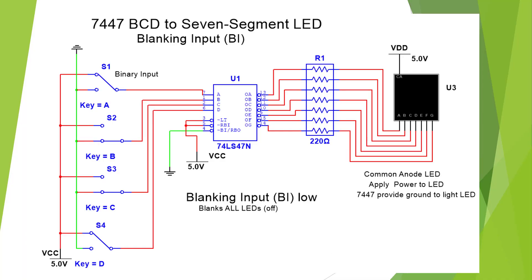Here's the 7447 tied into the blanking input. We see that pin 4 is tied low and that will give us a blanking input, which means that all the LED segments are off and it'll ignore all the inputs and blank it out.